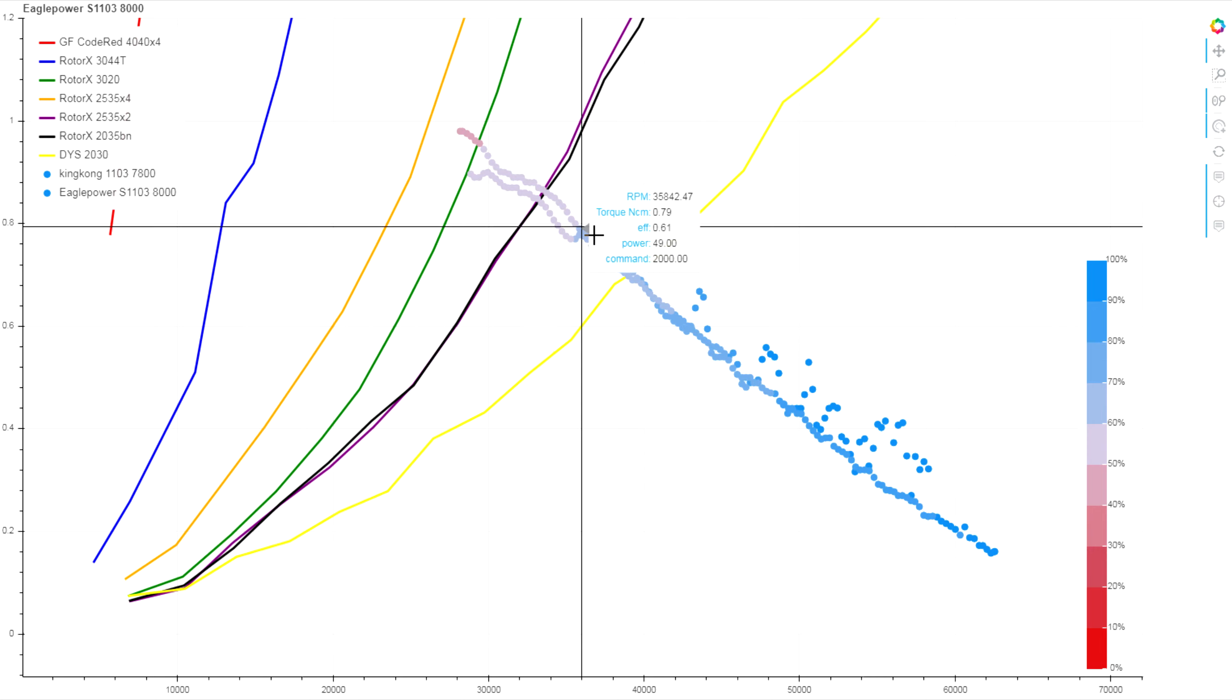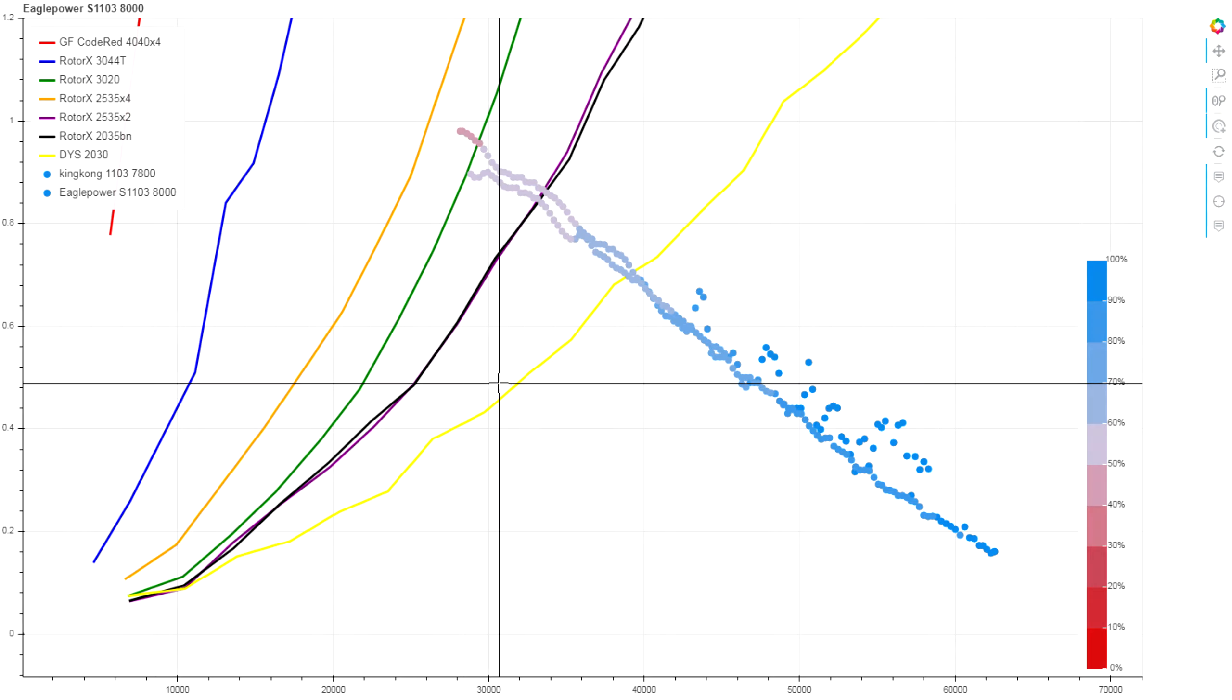If we compare the full throttle traces you can see just how close the two are. They are dead on top of each other. The torque is identical all through the range. The efficiency bands are right on top of each other. There's no distinguishing these motors from each other.